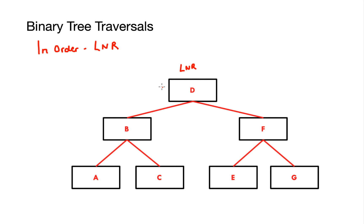Let's look at that in action. I write down my rule at the root node — we always start at the root node — and then I traverse the left subtree first, looking at B. I rewrite my rule as left-node-right and apply the first rule, which is traversing the left subtree of B.